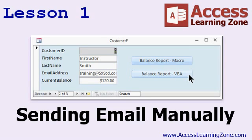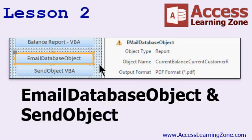We will start out by learning how to send email from Access using Outlook by sending reports from the database directly to a single email. We will learn about the Send Object and Email Database Object macro and VBA commands, and we will talk about the Outlook security warning and what it means.